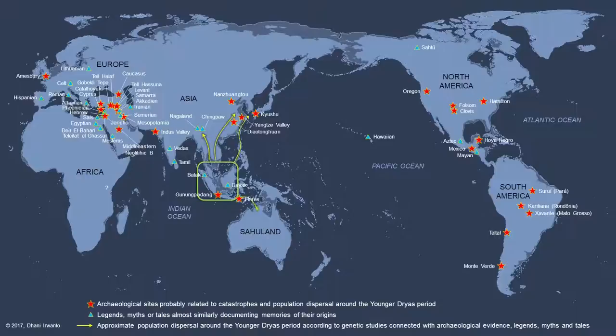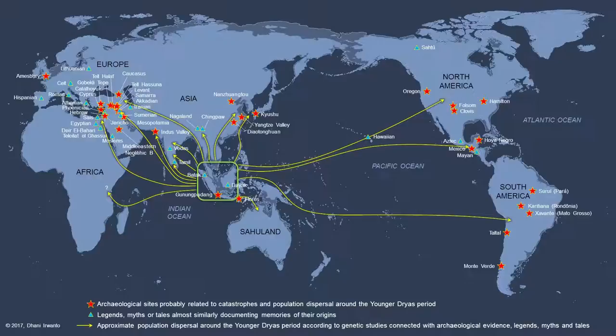With the bulk of collected archaeological and genetic studies, as well as legends, myths, and tales, I have made an attempt to reassemble the possible connections of compatibilities to obtain the pattern of population dispersal. The red stars are the archaeological sites probably related to catastrophes and population dispersal around the Younger Dryas period. The science triangles are the legends, myths, or tales almost similarly documenting memories of their origins. The lines with arrows are the approximate population dispersal around the Younger Dryas period according to genetic studies connected with archaeological evidence, legends, myths, and tales.